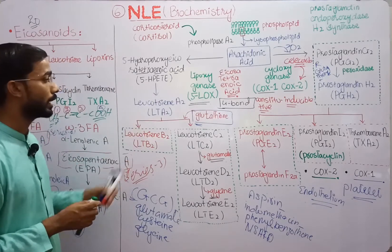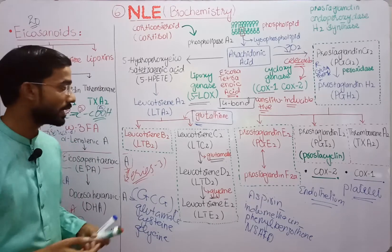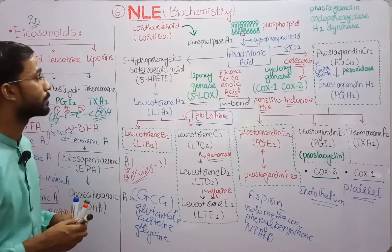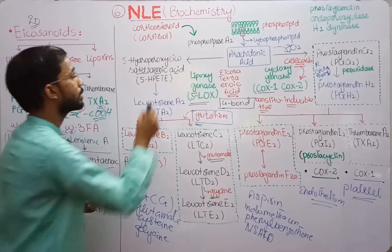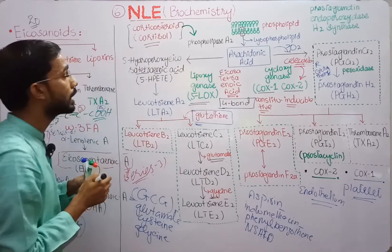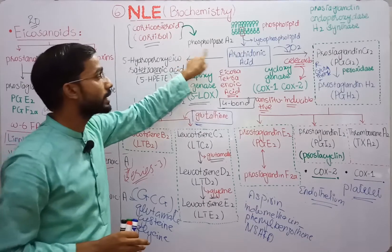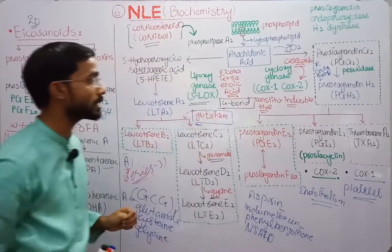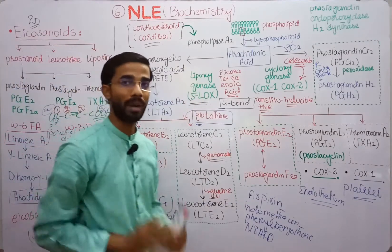Leukotrienes are important in inflammatory and hypersensitivity reactions like asthma. They are only blocked by corticosteroids because if we inhibit phospholipase, it will stop both the cyclooxygenase pathway and the lipoxygenase pathway.